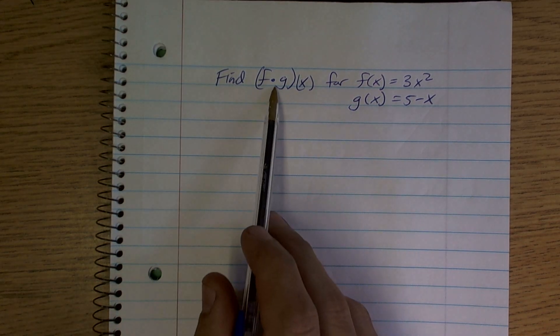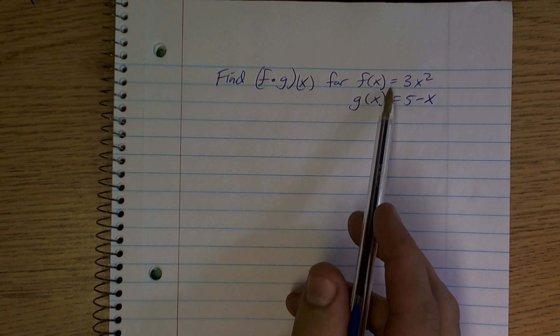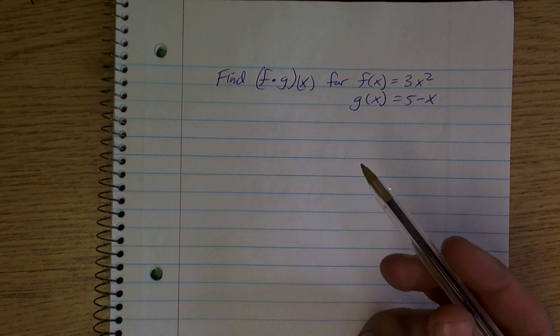Alright, so it says find f times g of x for f of x equals 3x squared, g of x equals 5x minus 1.